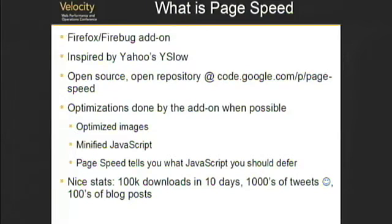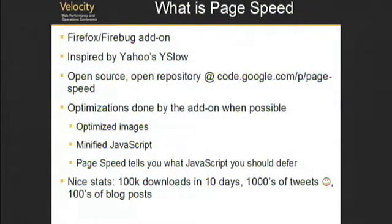Some of the optimizations we do in the add-on: we tell you that an image is not fully compressed and could be compressed losslessly more, but we also give you the actual optimized image so you can just take it and put it on your website. We also minify JavaScript — a lot of people use their development file on the web server, but those files have comments and whitespace that are just unnecessary bits on the wire. Another cool feature is that page speed will tell you which JavaScript you don't need to load initially when the page loads.